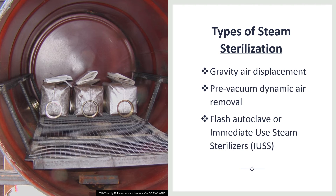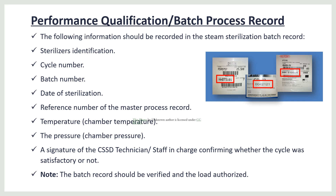Types of autoclaves include gravity type displacement, pre-vacuum dynamic air removal, flash autoclave, and immediate use steam sterilization. For performance qualification, the following information should be recorded: sterilizer identification, cycle number, batch number, date of sterilization, reference number of the master process record, temperature, pressure, and the signature of the operator. This batch record should be verified and the load authorized.